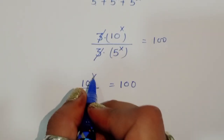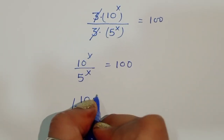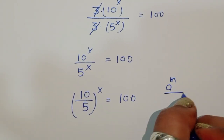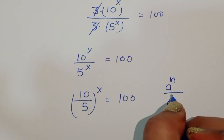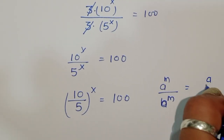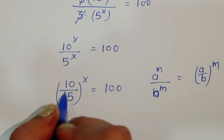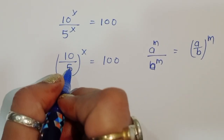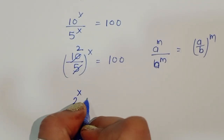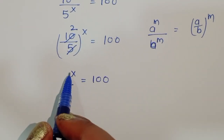We can take the common power out, so (10/5)^x equals 100. Using the formula a^m / b^m = (a/b)^m, we get (10/5)^x = 2^x = 100.